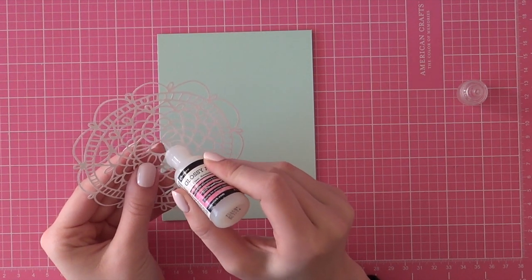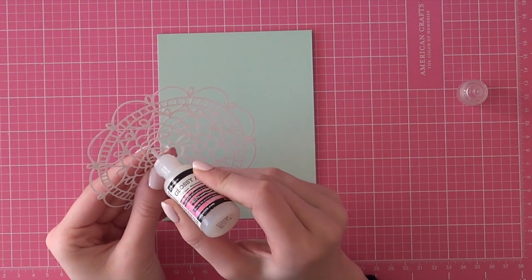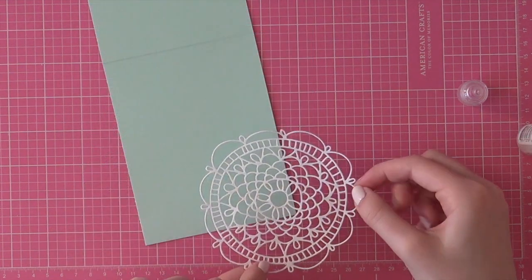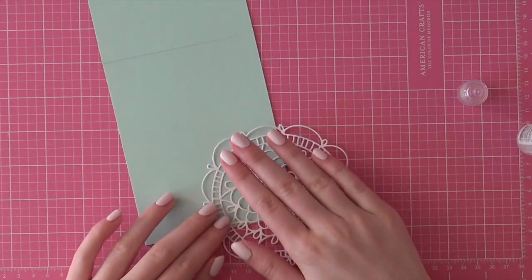Then I took some glossy accents and I am adding some of that adhesive because I will be adhering that doily to my note cards. You can also use any other liquid glue that you have on hand.